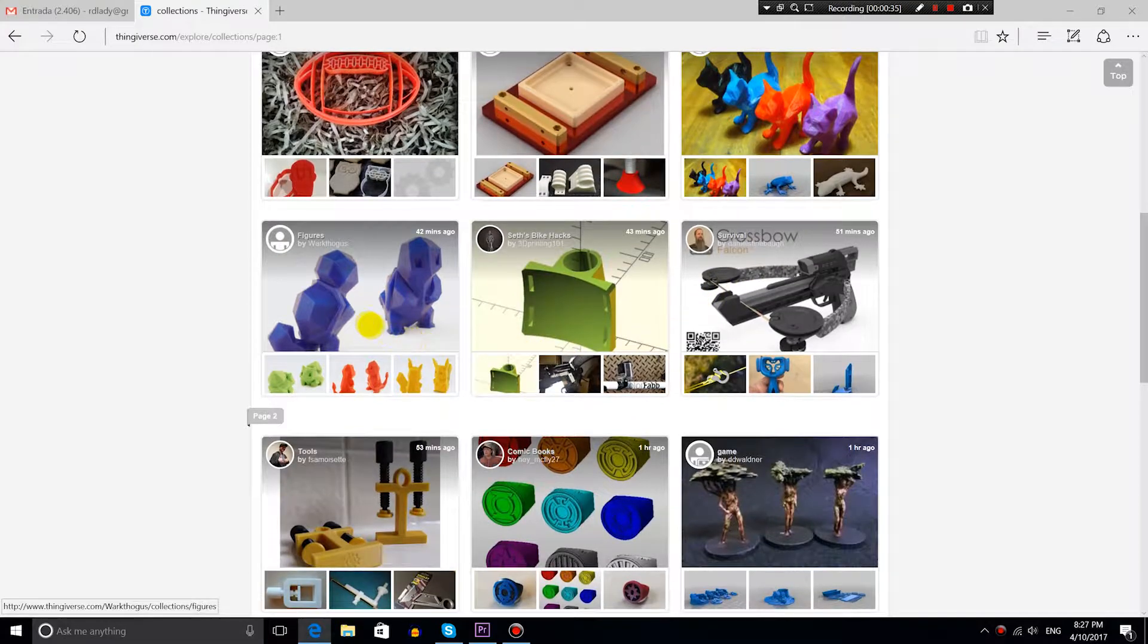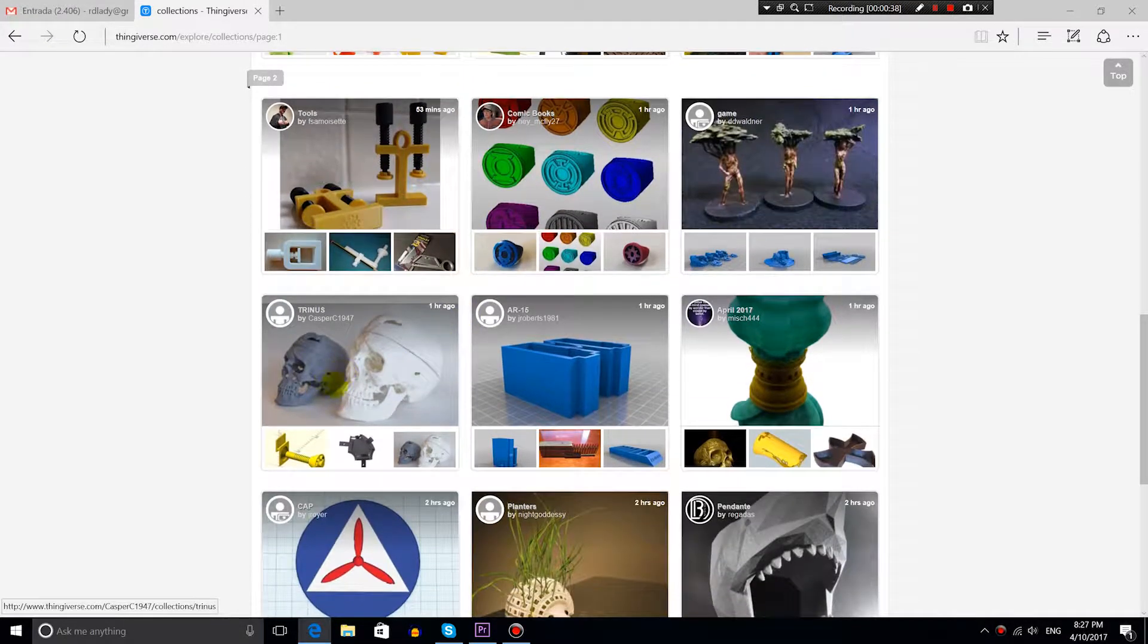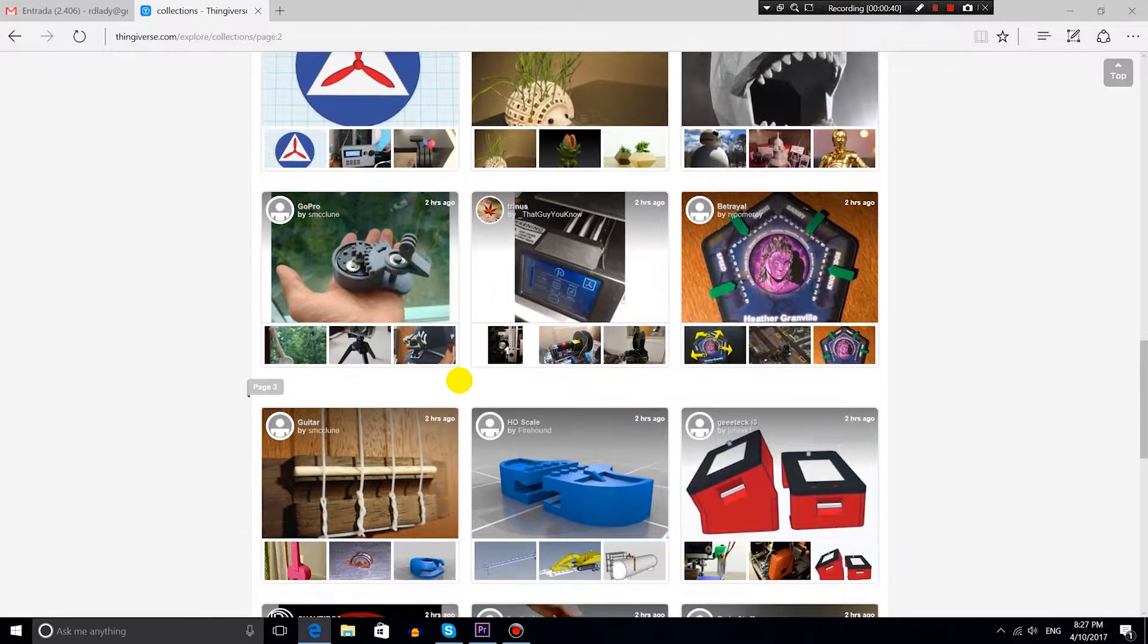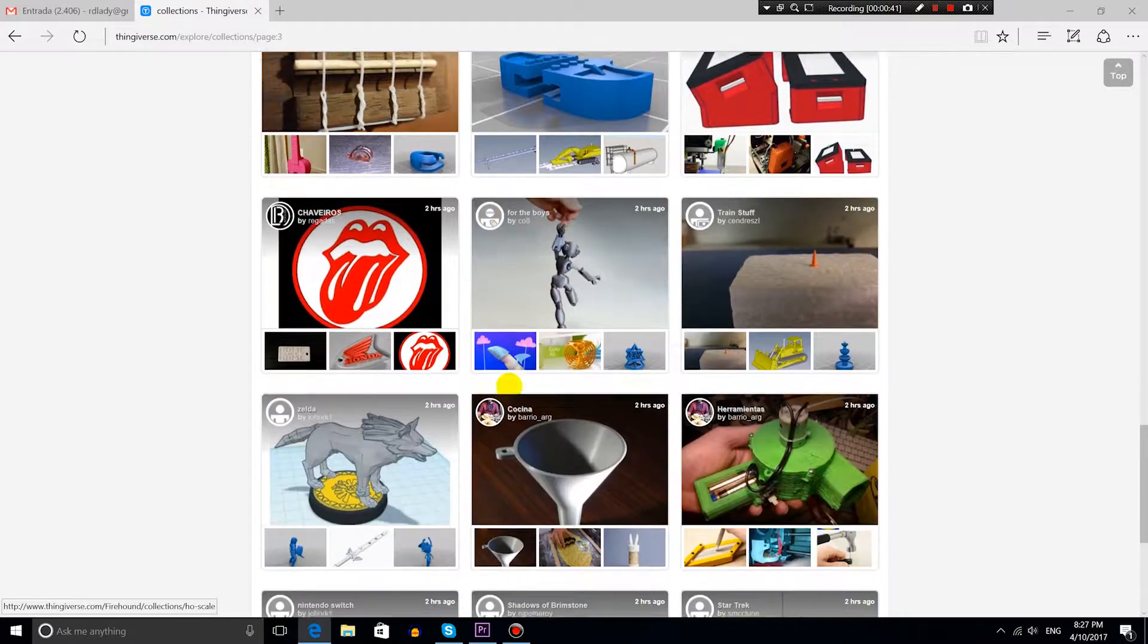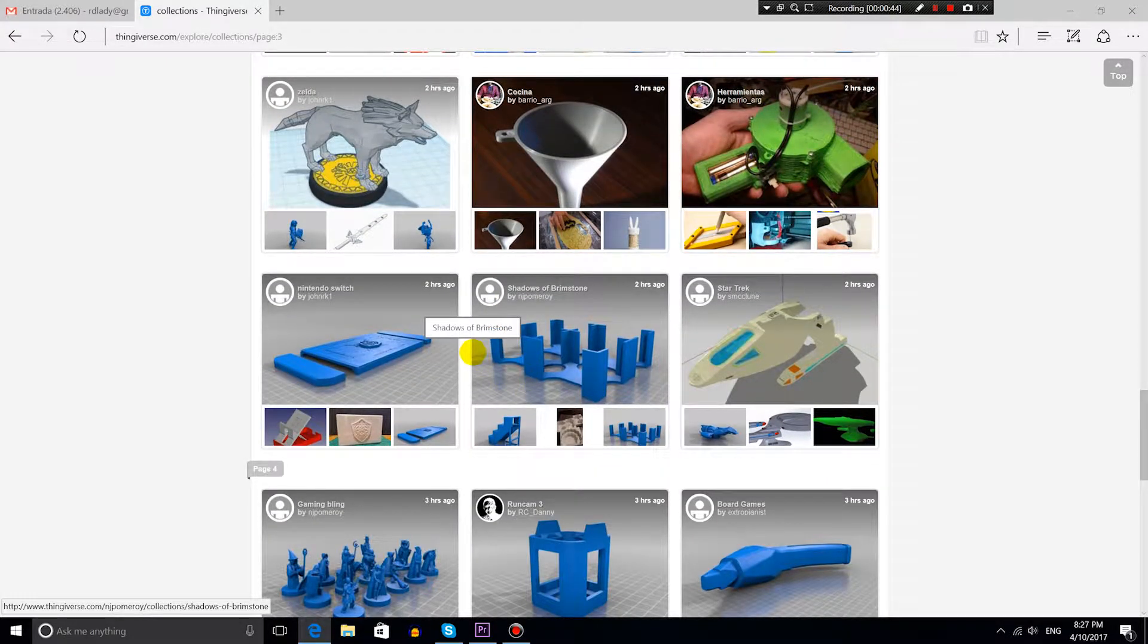You go to the Thingiverse website, search for the 3D model that you want, download it and send it to the 3D printer. You can print this 3D model as easy as downloading and printing a PDF in a normal printer.